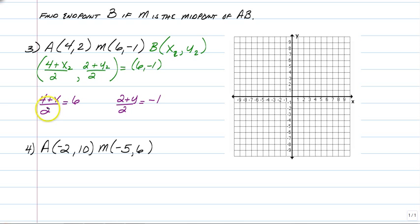So you need to get rid of the 2 in the denominator first. So multiply both sides by 2. And you'll have 4 plus x is equal to 12. Subtract 4 from both sides and you have x equals 8.